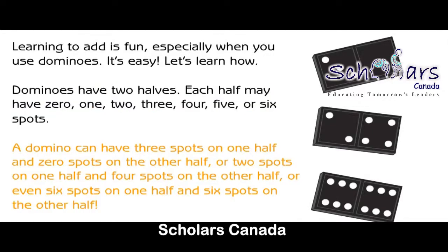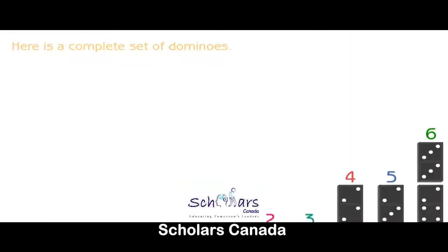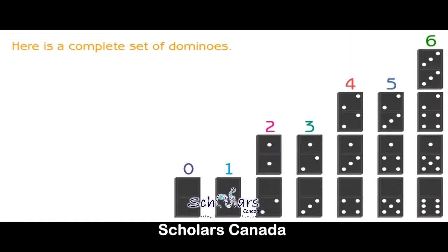A domino can have three spots on one half and zero spots on the other half. Or two spots on one half and four spots on the other half. Or even six spots on one half and six spots on the other half. Here is a complete set of dominoes.